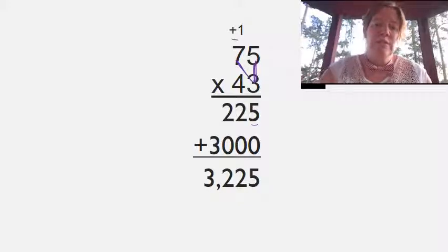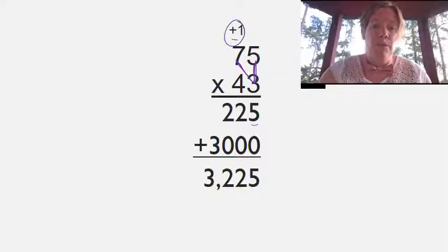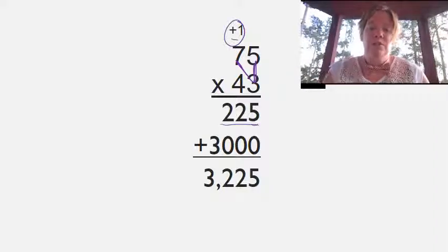Next, I multiply the tens, three times seven. Three times seven is twenty-one, but I have to add that one on top. That equals twenty-two, so my first partial product is 225.